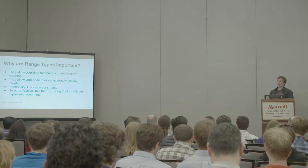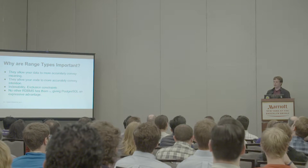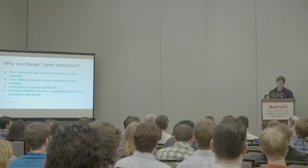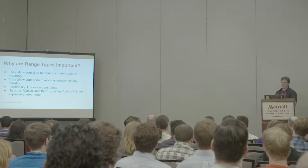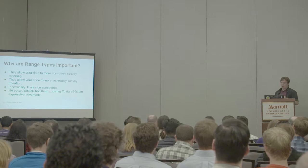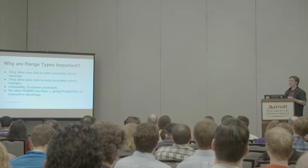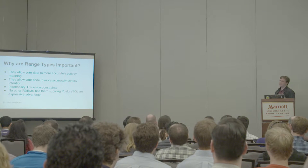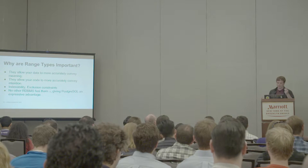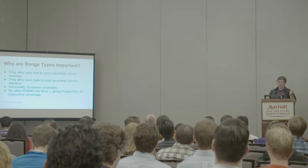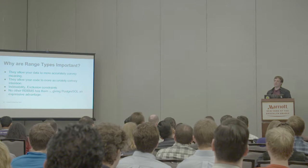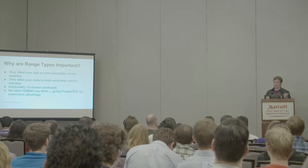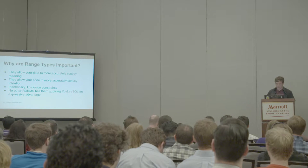You can also index on ranges. Someone last night mentioned that BRIN was possible, but I hadn't heard that before and didn't check it before this presentation. Ranges also allow you to do exclusion constraints, which is useful for things like resource contention — no two people can be staying in the same hotel room at the same time. And the thing that interests me most is that no other relational database has them, or at least they didn't the last time I looked.